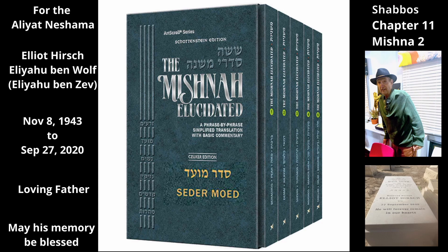The Mishnah contrasts the preceding case, in which one is exempt for transferring across a public domain, with the following case of transferring through a public domain, for which a person could sometimes be liable. If both balconies were coming out of one upper story — that is, both were on the same side of the street — one who hands an item from one balcony to another is liable.